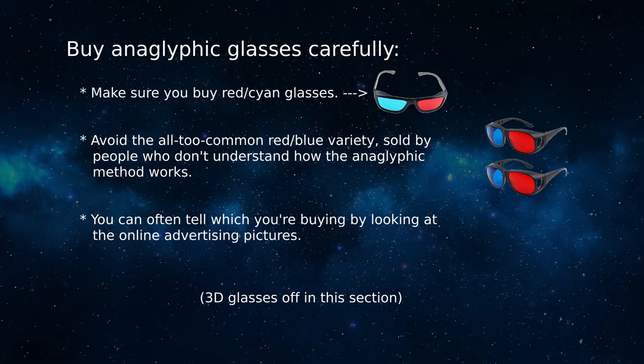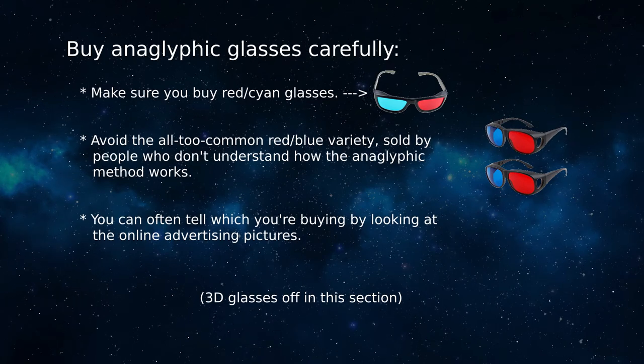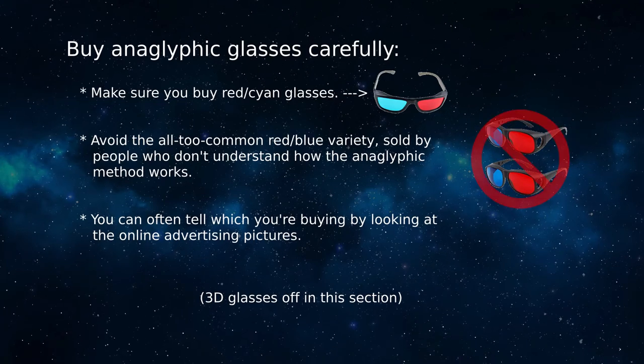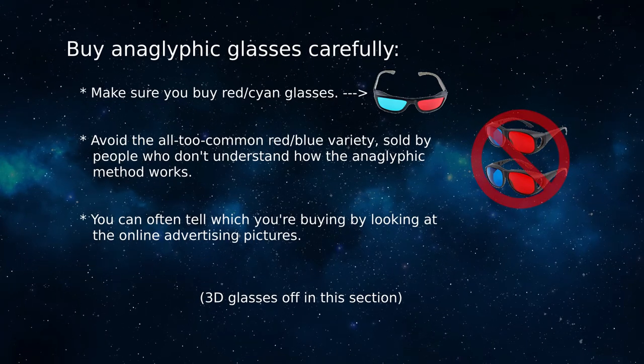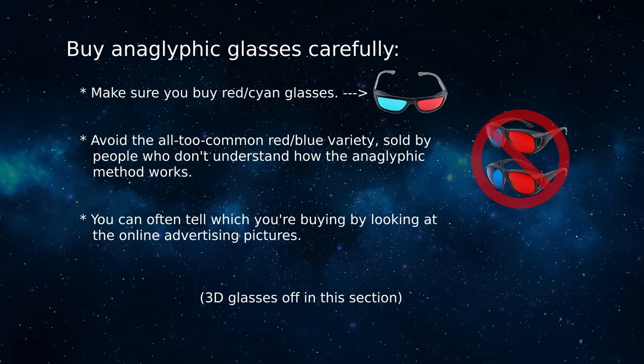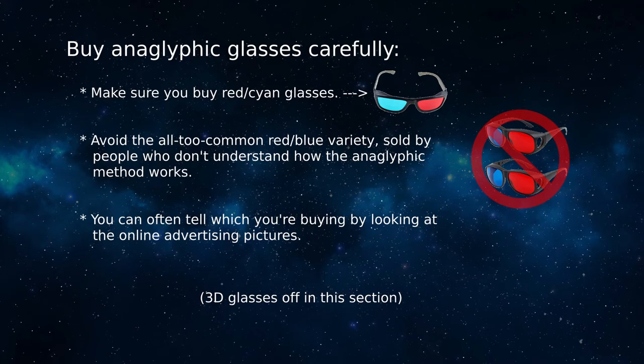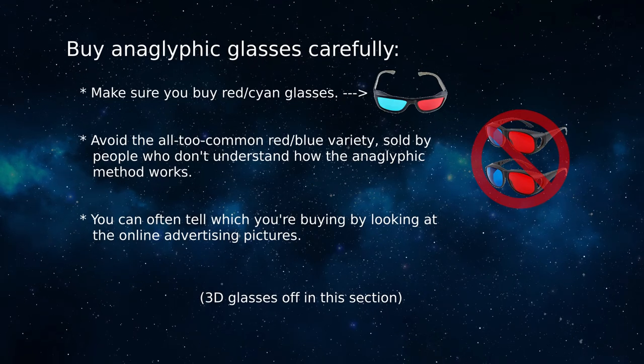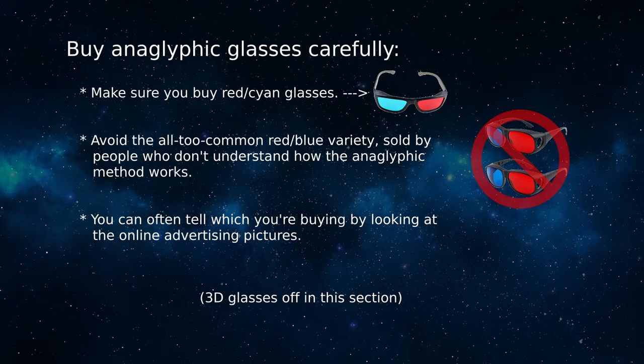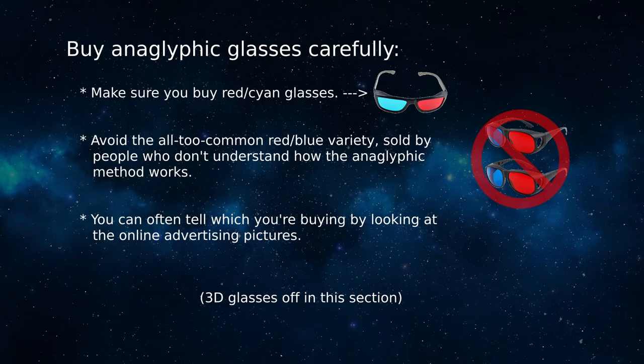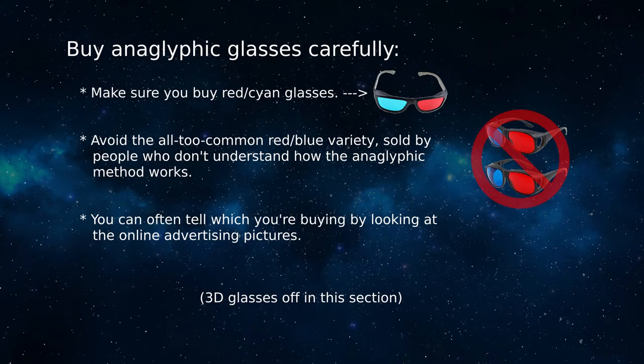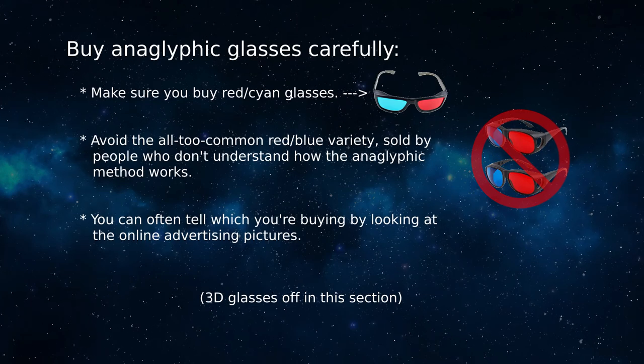I'd like to bring up one more issue. When you buy anaglyphic glasses, make sure they're red-cyan, not red-blue. It turns out you can often tell which color filters are being used by going online and looking at the picture of what you're ordering. Red-cyan glasses are technically the right choice because the resulting image is brighter as well as being color balanced. A monochrome anaglyph should appear grayscale, not purple. The existence and sale of red-blue glasses for anaglyphic use only reveals that someone doesn't understand how this method works.